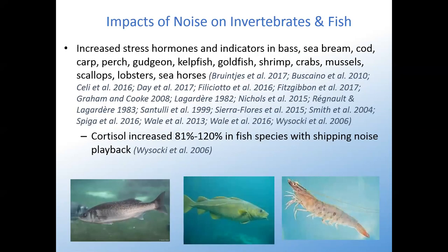Increased stress hormones and other stress indicators were found in bass, sea bream, cod, carp, perch, gudgeon, kelpfish, goldfish, shrimp, crabs, mussels, scallops, lobsters, and seahorses. Cortisol increased 81 to 120 percent in fish species with a shipping noise playback. Sea bream moved more, showed less capacity for feeding, migration, and reproduction in the presence of vessel noise, and increased their oxygen uptake with pile driving noise, implying higher stress levels.